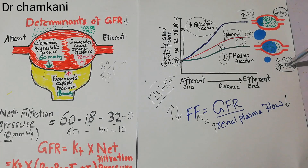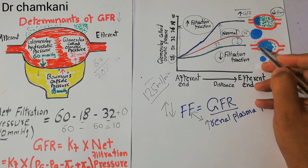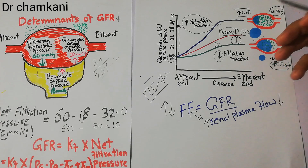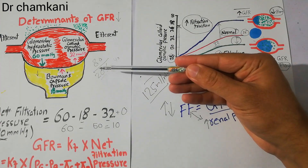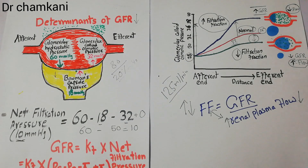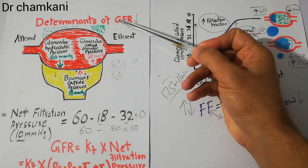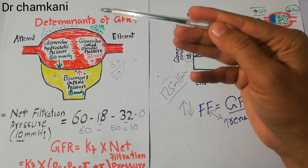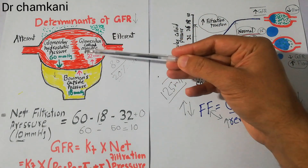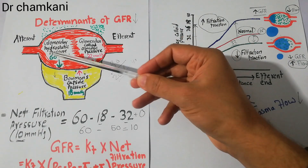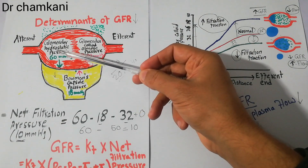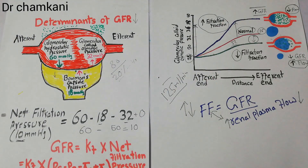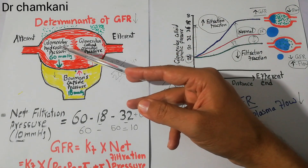Conversely, if renal plasma flow is increased, the filtration fraction will fall because plasma flowing quickly has less time for filtration, so the fraction filtered may drop below 20%. When filtration fraction falls, protein concentration decreases, glomerular colloid osmotic pressure decreases, and GFR increases. This proves that increasing blood flow can increase GFR without any change in glomerular hydrostatic pressure.